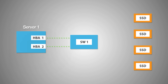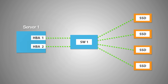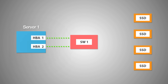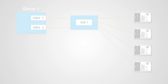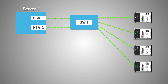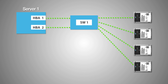Though failover support is available in this configuration, there is only one switch connecting to the drives, so if the switch fails, access to the data would still be lost. To avoid these single points of failure, utilizing dual port drives and two switches that connect to every drive will alleviate this problem.